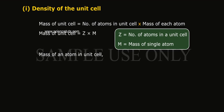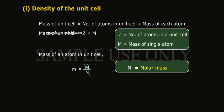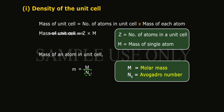Mass of an atom in unit cell: m is equal to M by N₀, where M is equal to molar mass and N₀ equals to Avogadro number.